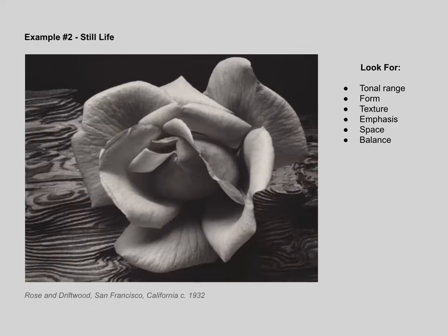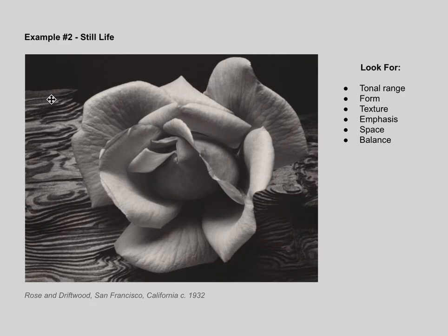Here's another image of his that is quite famous — it's called Rose and Driftwood, shot in San Francisco in 1932. From what I understand, he just took a rose and put it on a piece of wood he found on the beach, lit it, and photographed it. Note the great tonal range, from pure black to fairly bright highlights and bright grays — nothing quite reaches the highest or brightest value. There's great form in the flower and even in the ripples of the driftwood that form the background. The space, which we would normally call negative space, is so interesting compared to the rose that we spend time examining it — it becomes its own positive space at times. So there's great balance between the main subject and the background, great form and texture.